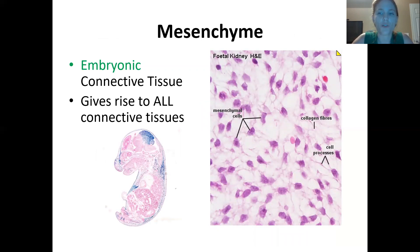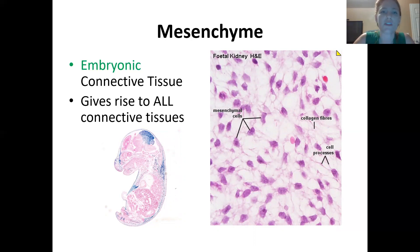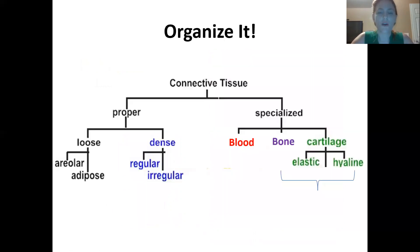Another common characteristic of all connective tissues is that they all originate from the same embryonic tissue, called mesenchyme. All connective tissues are derived from mesenchyme. Make sure you're familiar with that term.